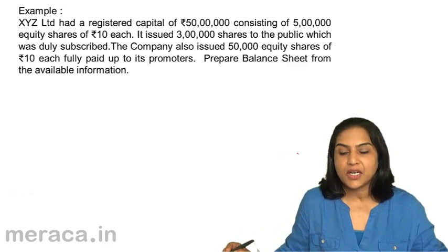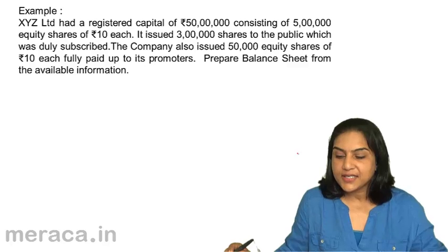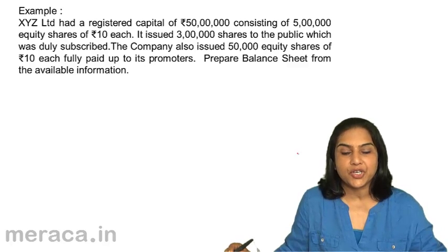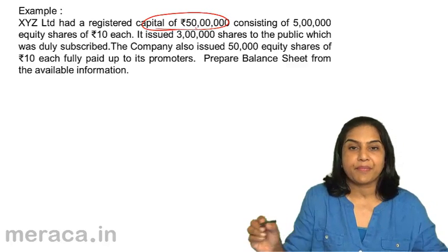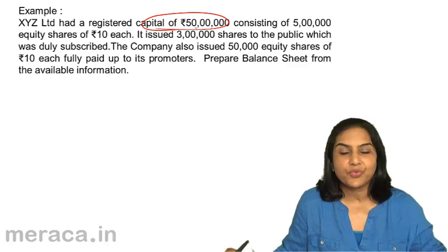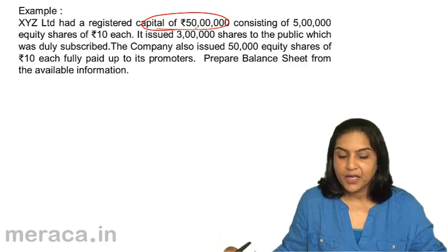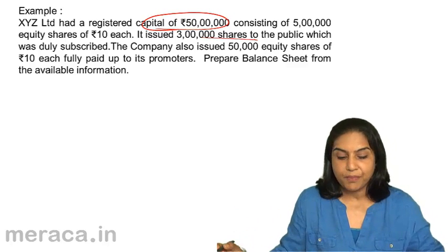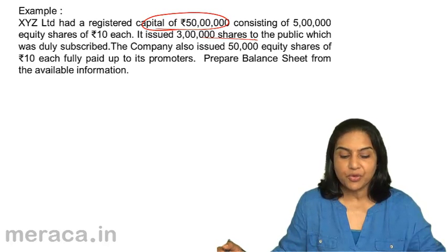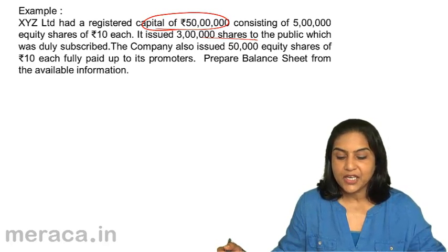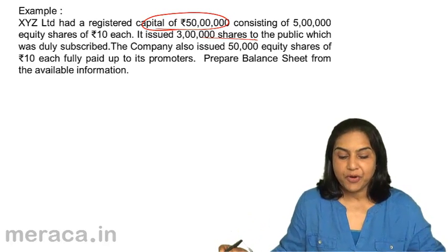Z had a registered capital of 50 lakhs consisting of 5 lakh equity shares of 10 each. Registered capital is the authorized capital — the capital that the company is registered with, the maximum amount of capital that it can raise. It issued 3 lakh shares to the public which was duly subscribed. The company also issued 50,000 equity shares of rupees 10 each fully paid to its promoters. Prepare balance sheet from the available information.